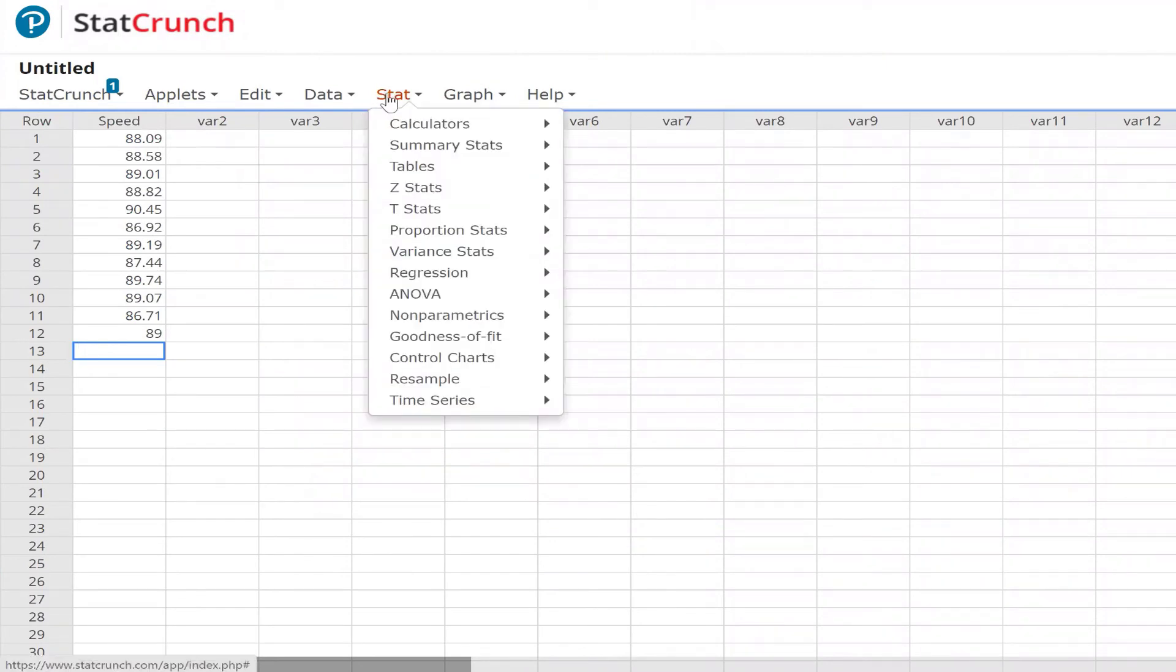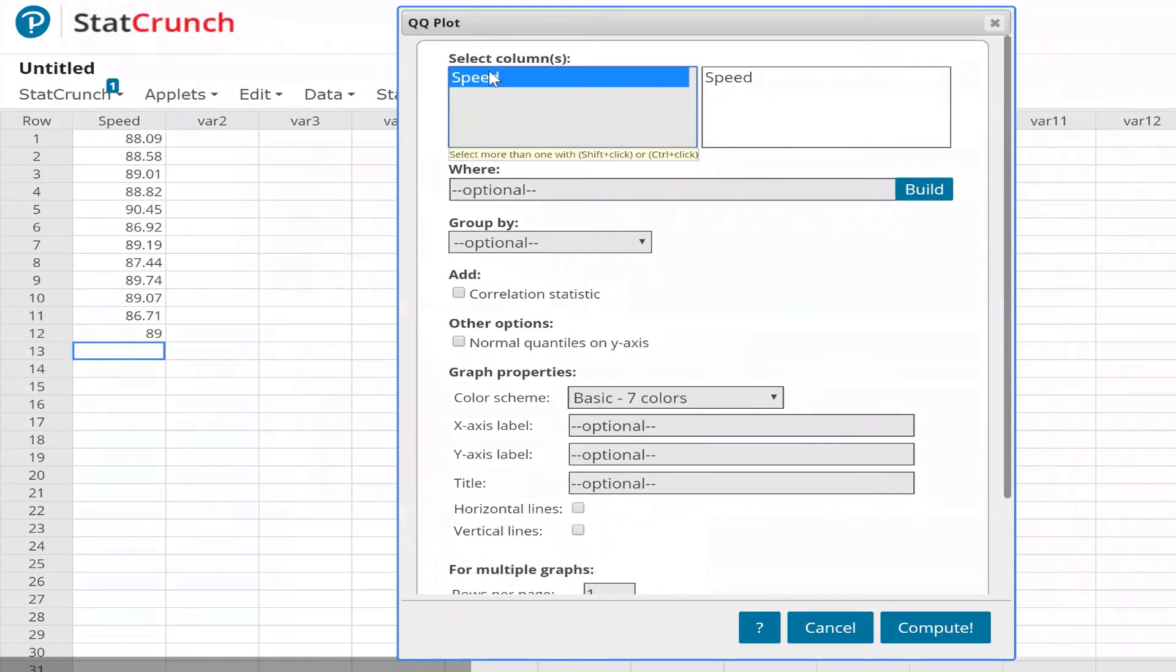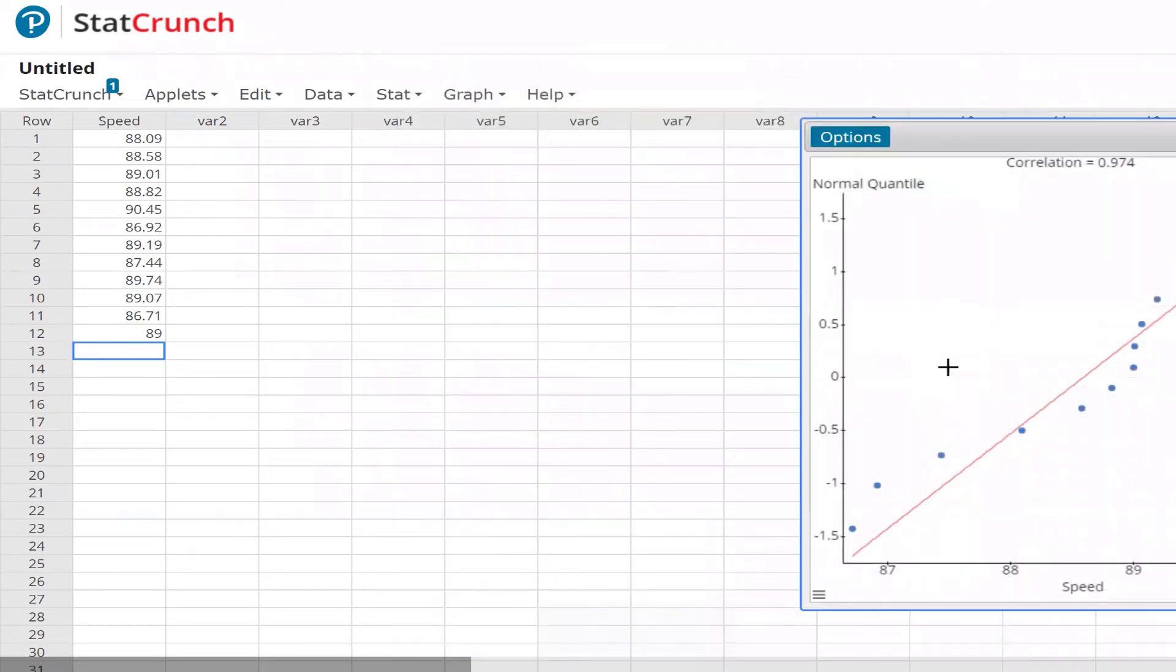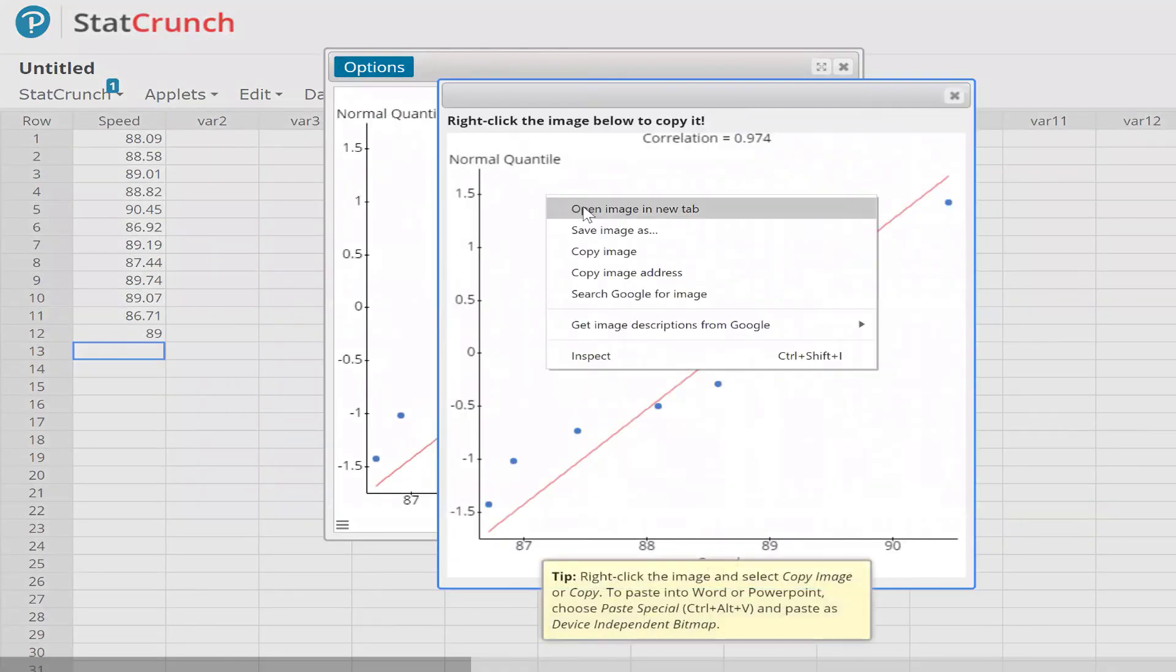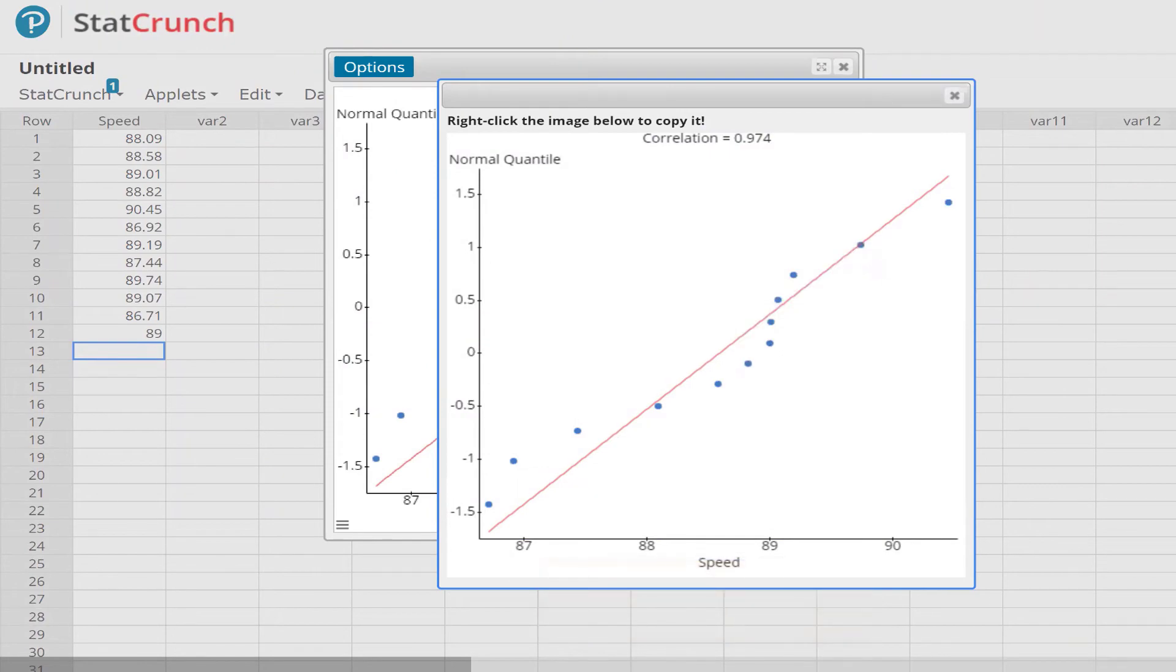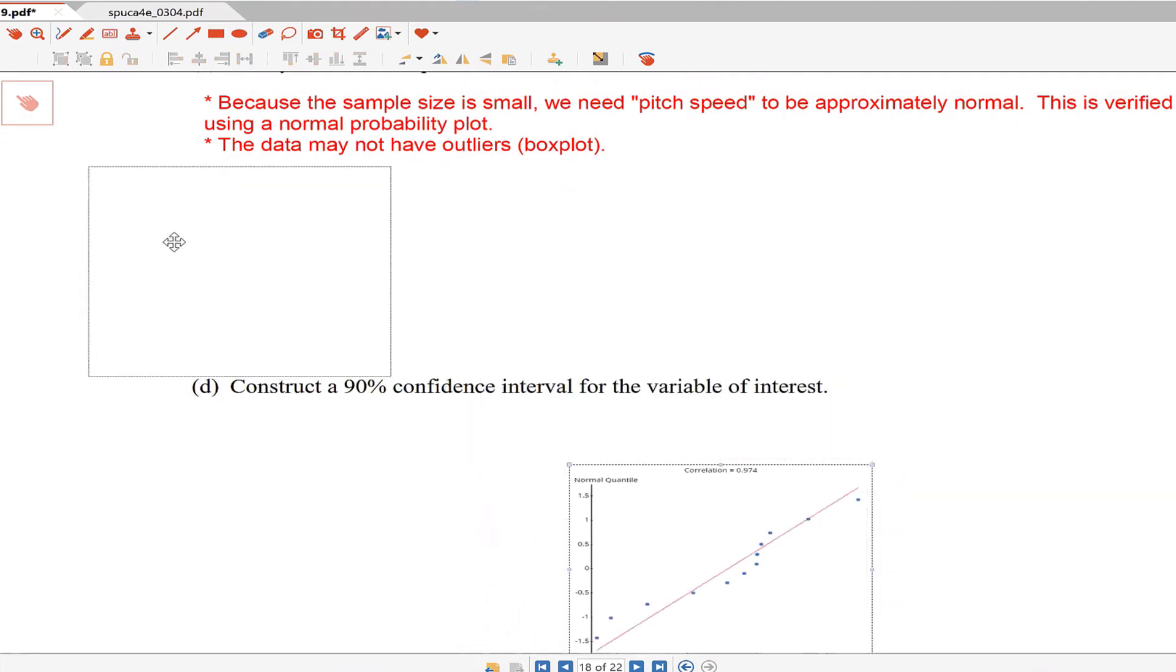To draw the normal probability plot, we go to graph QQ plot. You select the variable speed. You want to add the correlation stat, and I typically have the normal quantiles on the y-axis. Click Compute, and there is the normal probability plot. What we're going to do is compare this correlation stat to the critical value from the table.